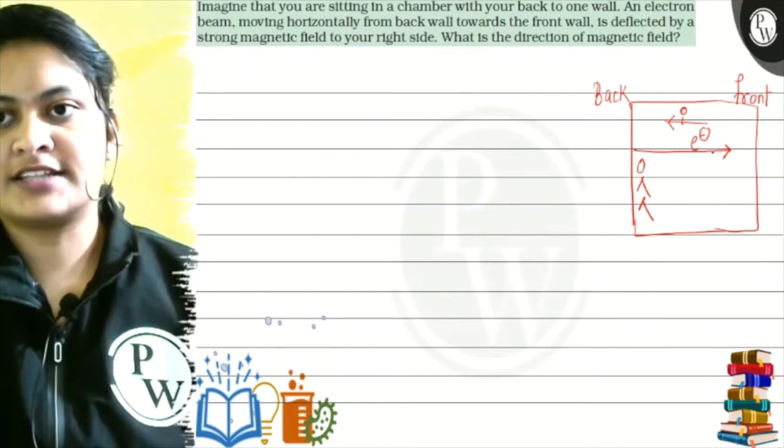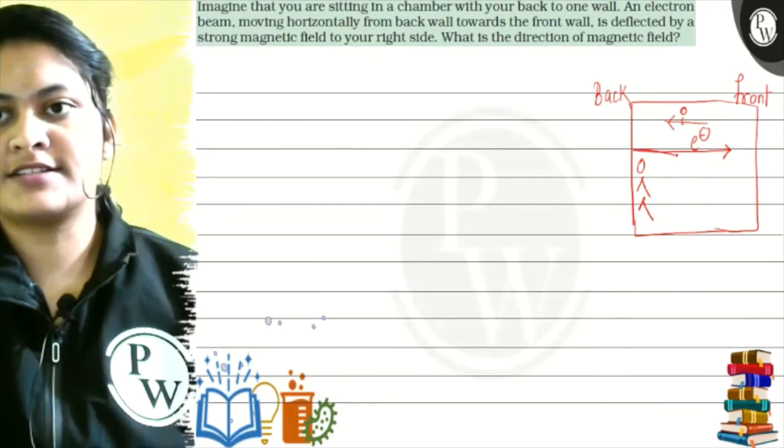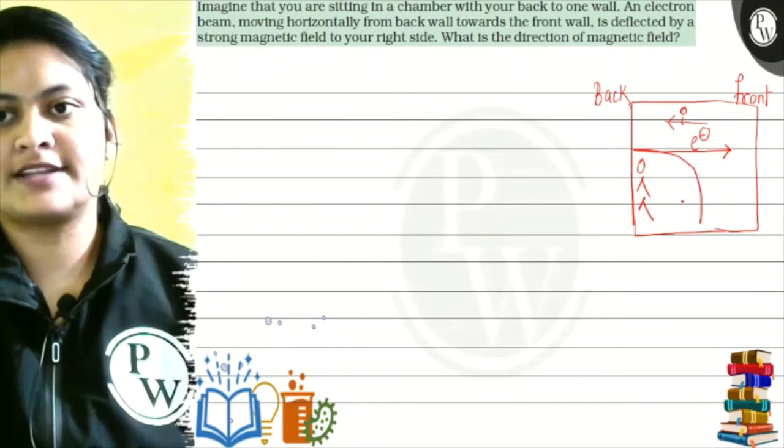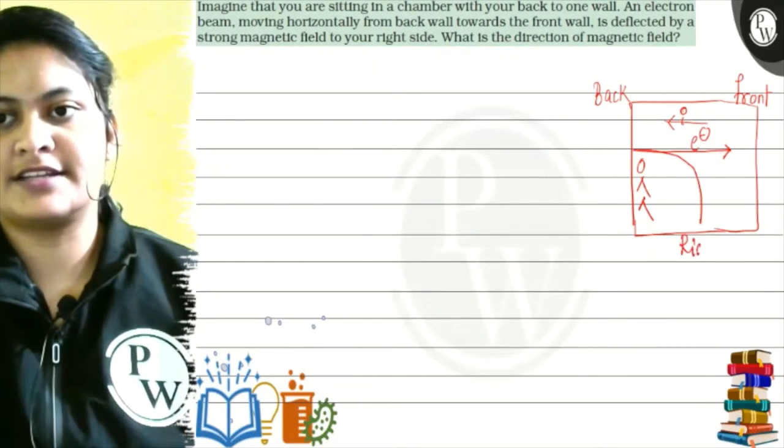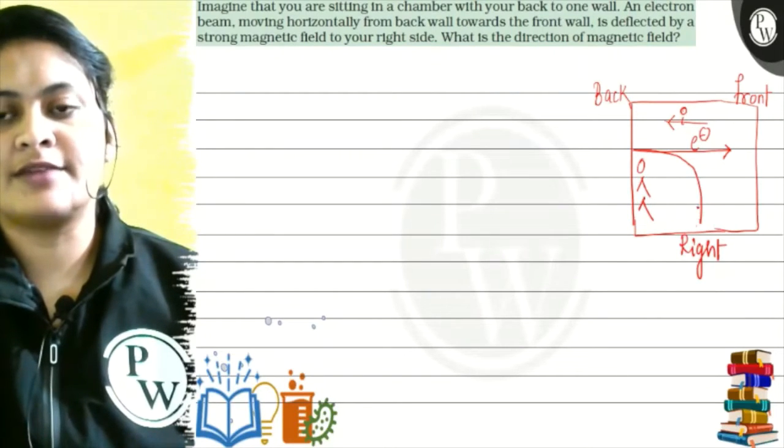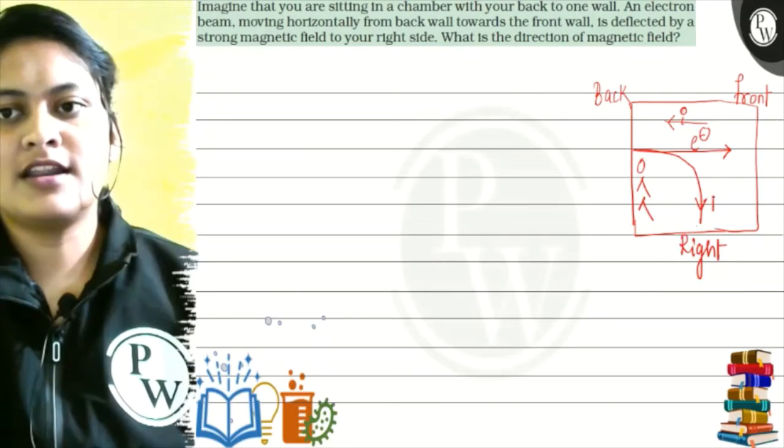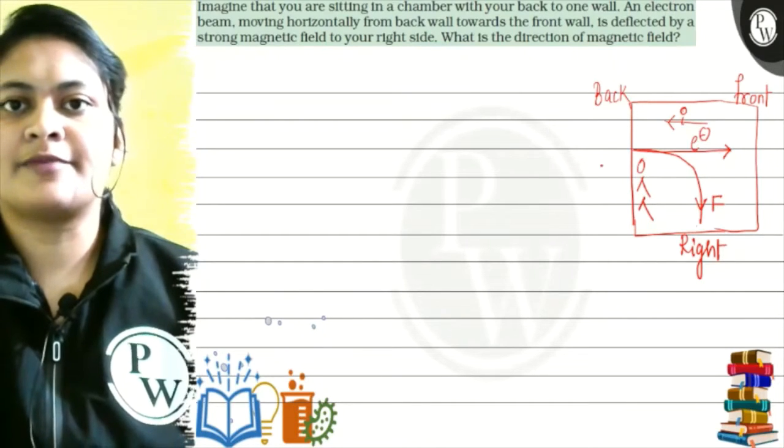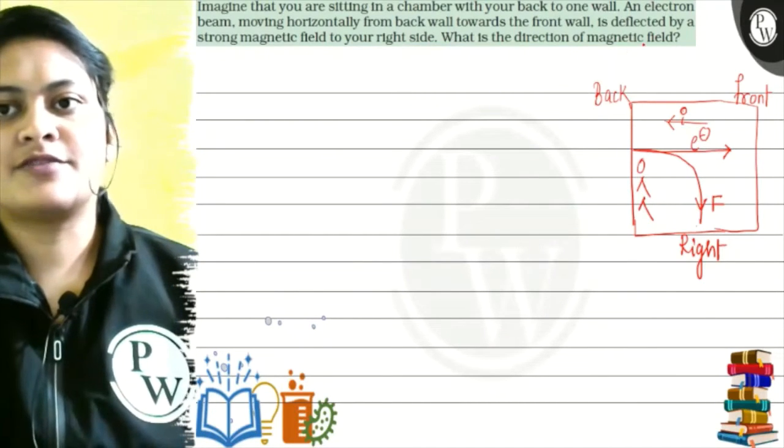Now, this electron is going here. What is the current direction? We are asking for the right side. Right? In our right side, the electron is deflected to the right side. It means that the force is here. It is deflected to the right side. So, what is the direction of the magnetic field?